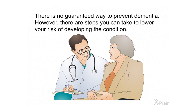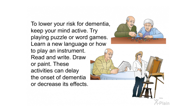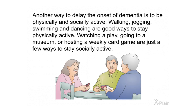There is no guaranteed way to prevent dementia; however, there are steps you can take to lower your risk. To lower your risk, keep your mind active by playing puzzle or word games, learning a new language or instrument, or reading, writing, drawing, or painting — these activities can delay the onset of dementia or decrease its effects. Being physically and socially active is another way to help: walking, jogging, swimming, and dancing are good physical activities, while attending plays, visiting museums, or hosting a weekly card game can keep you socially engaged.